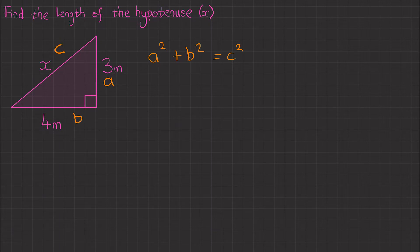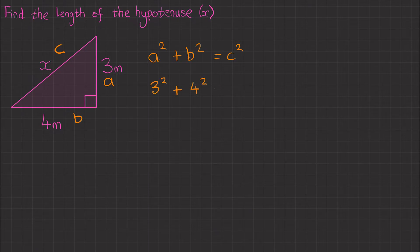If you really want to, you can call this a and call this b, but this always has to be c. Substituting the values: we've got 3 squared plus 4 squared equals c squared, which is x squared.